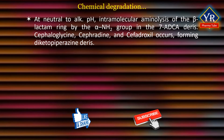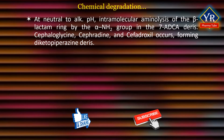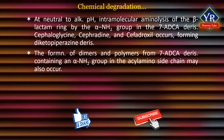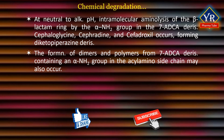At neutral to alkaline pH, intramolecular aminolysis of the beta-lactam ring by the alpha-amino group in the 7-aminodesacetylcephalosporonic acid derivatives such as cephaloglycine, cephradine, and cefadroxyl occurs, forming diketopiperazine derivatives. The formation of dimers and polymers from 7-ADCA derivatives containing an alpha-amino group in the acylamino side chain may also occur, especially in concentrated solutions and at alkaline pH.